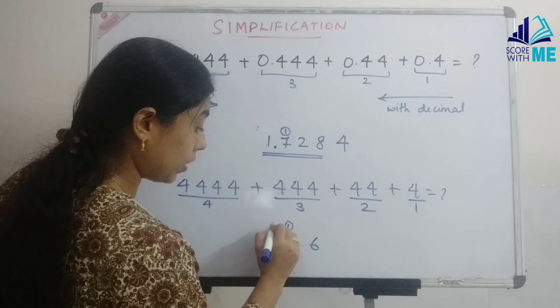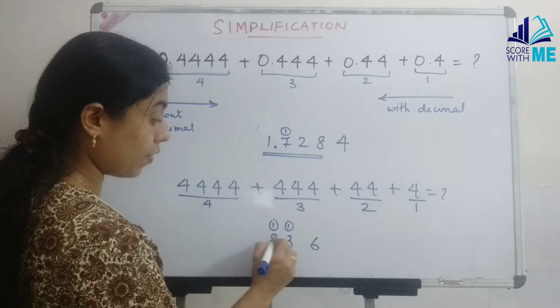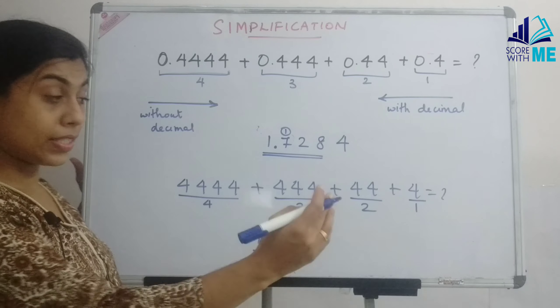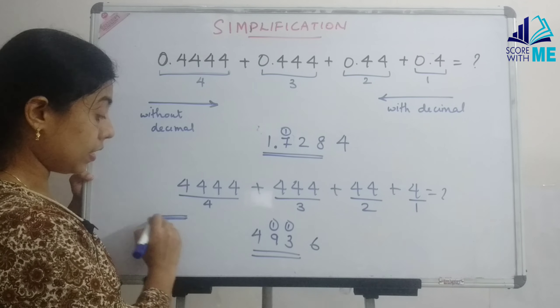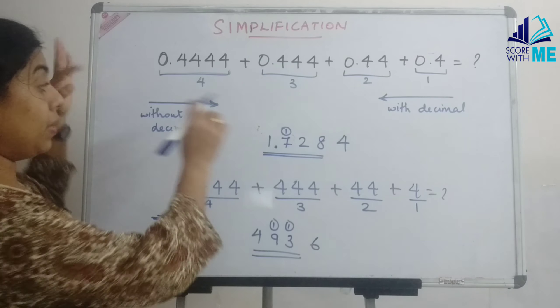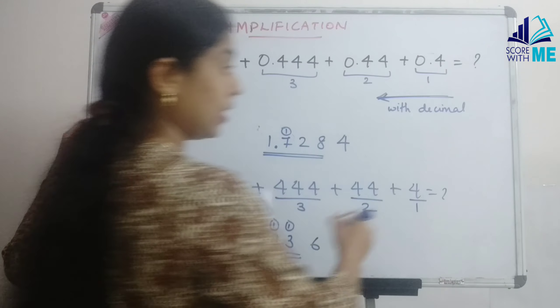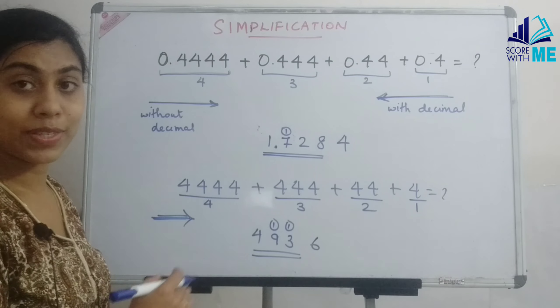So 4 times 4 is 16, 4 times 3 is 12 carry 1 is 13, 4 times 2 is 8 carry 1 is 9, 4 times 1 is 4. This was our sum. So we started doing from this end because we did not have decimal, without decimal. When we had decimal, we started doing it from the right end. So that is where the change comes.